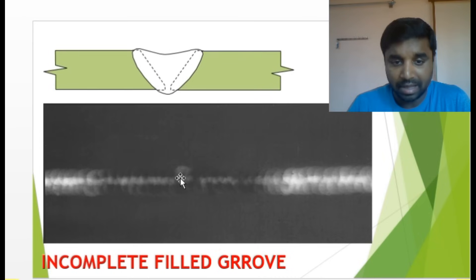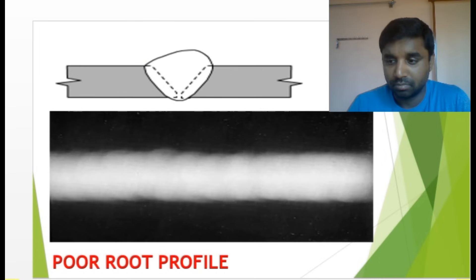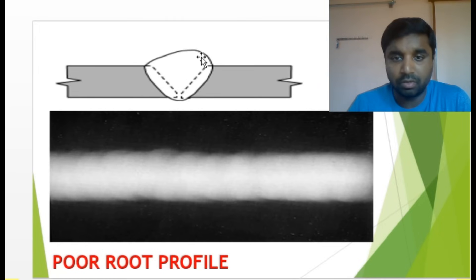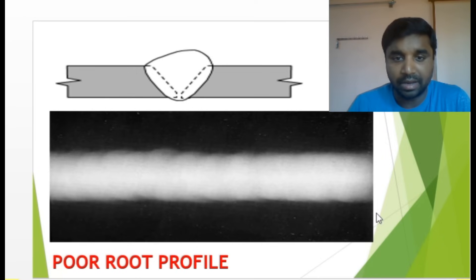Incomplete fill groove — there is a groove but the welder has filled it incompletely. In the radiograph, two sides appear black. Poor root profile — the root profile is poor; instead of going in a proper V shape, it goes unevenly. You can see the area showing poor root profile in the radiograph image.